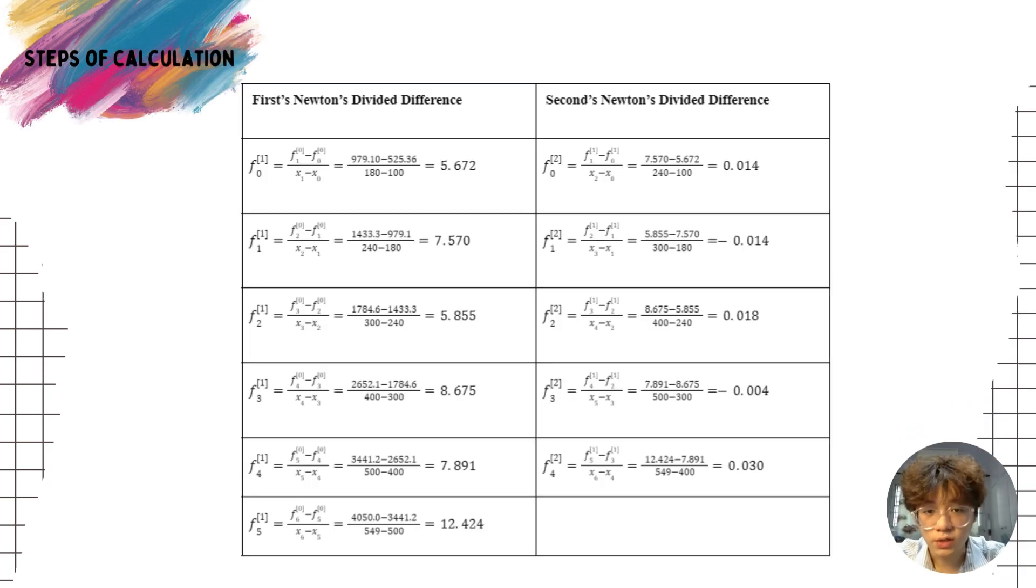Into the steps of calculation, for the first Newton's divided difference, we take f0 as our example. And the formula is f1 minus f0 over x1 minus x0 equals to 979.10 minus 525.36 over 118 minus 100. And the answer will be 25.672. For the second Newton's divided difference, we take f1 as our example. The formula is f2 minus f1 over x3 minus x1 equals to 5.855 minus 7.570 over 300 minus 180. And the answer will be negative 0.014.